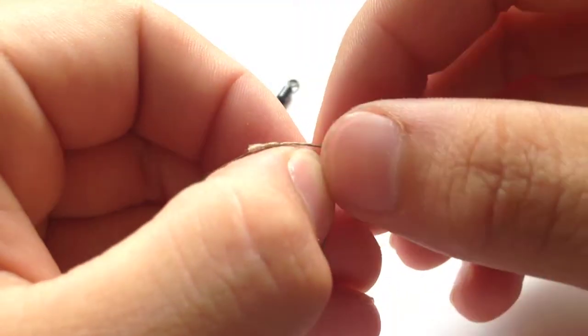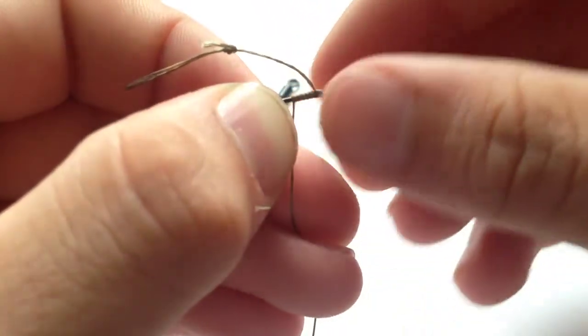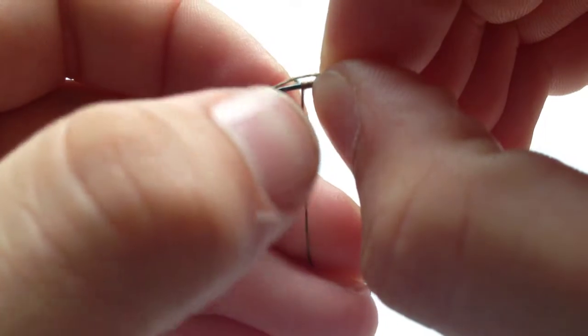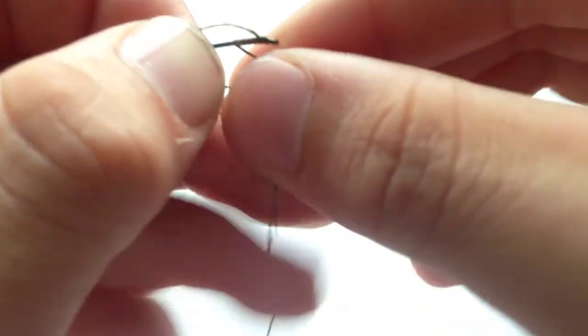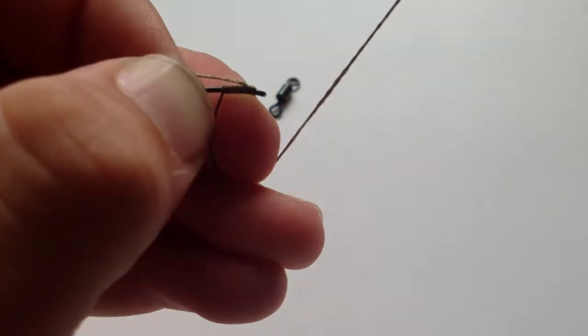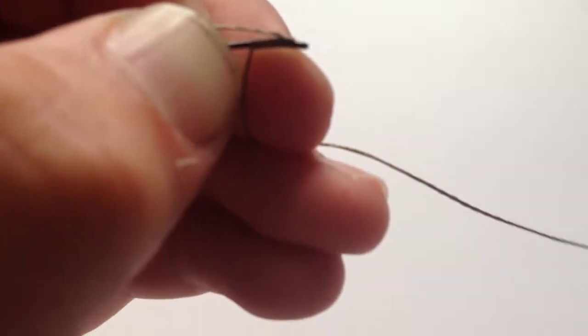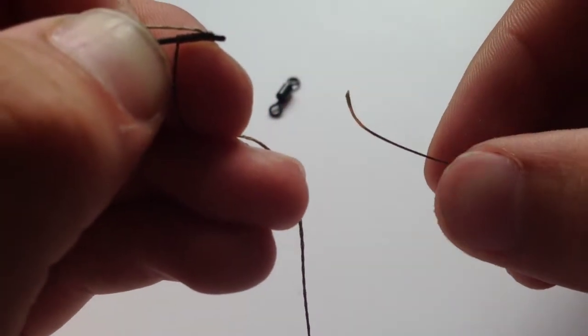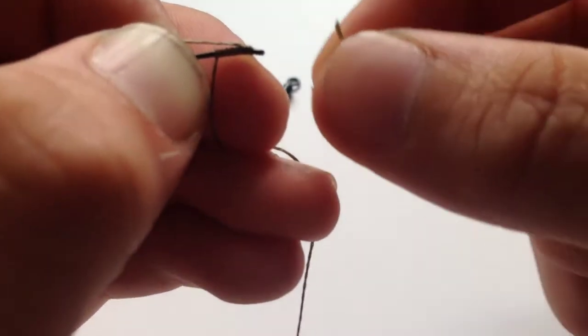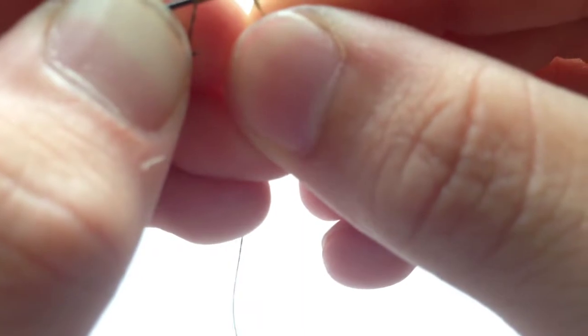Now you should end up with something that looks like this. Keep the knot that you've tied so far on the shank of the hook tight. Get the end of your hook link material and pass it back through the front of the eye of the hook.